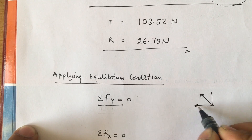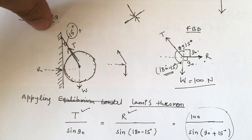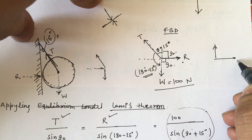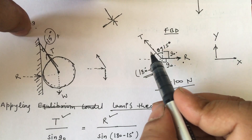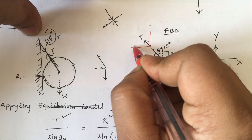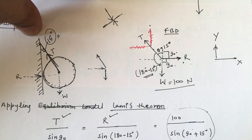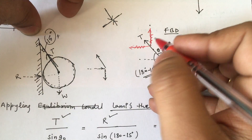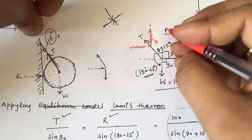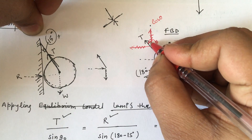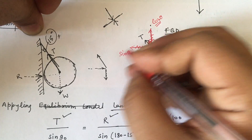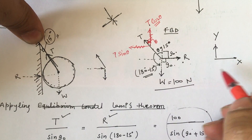We resolve all the forces T, R, and W into their components in the horizontal (x) and vertical (y) directions. There is only one inclined force, which is T, and it can be resolved into components. If the angle is theta (15 degrees), then the components are T cos theta in the vertical direction and T sin theta in the horizontal direction.